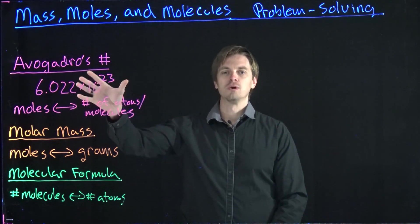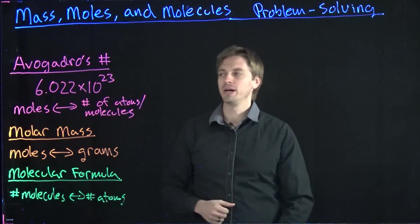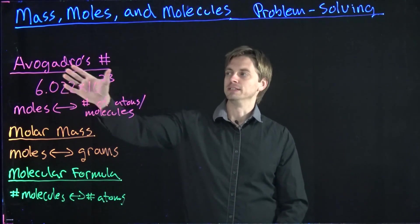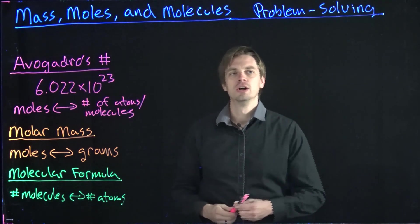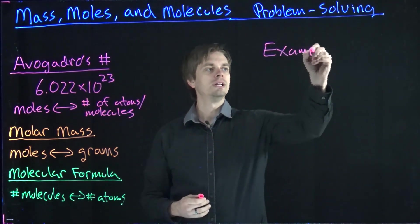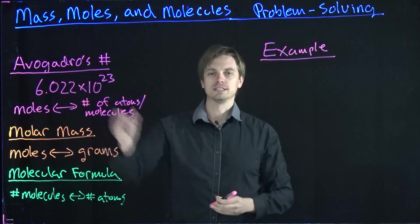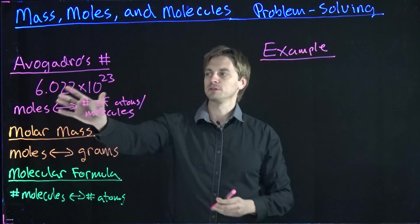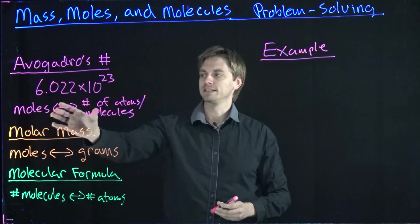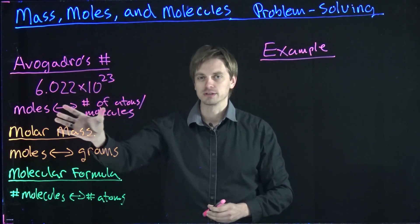First, let's make sure we're all on the same page about what each one of these means. Avogadro's number tells us how many molecules are in one mole of that substance. But Avogadro's number is actually a little bit more general than that because it tells us the number of objects in a mole of objects.